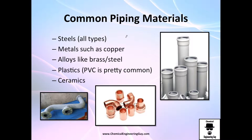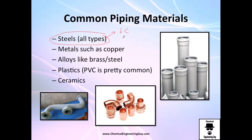The most common materials used in piping are steels. You cannot imagine how many steel types there are in the market — you have steels with low concentration of carbon, high concentration of carbon, and many rare metals such as manganese, zinc, and copper. Of course, the basis of steel is iron.